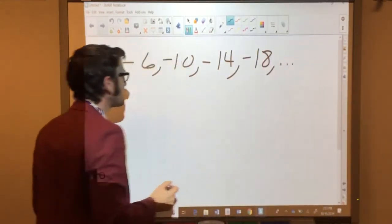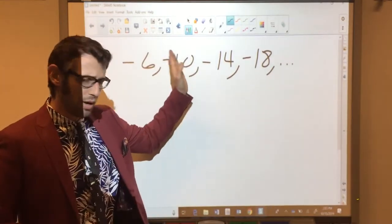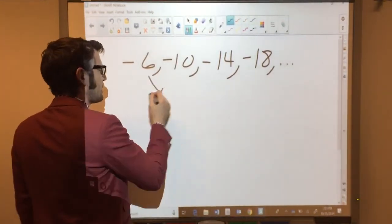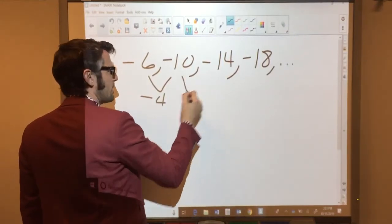You want to make sure that you are catching that they are actually going down, they're not going up. So the decrease here is by 4, not an increase of 4.